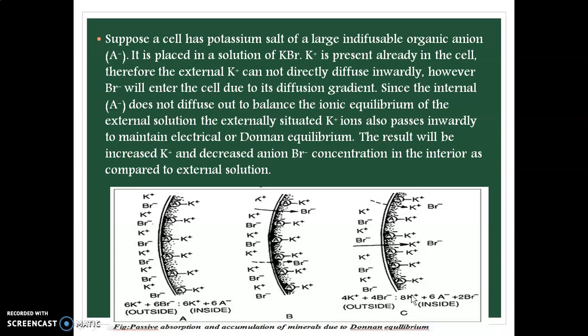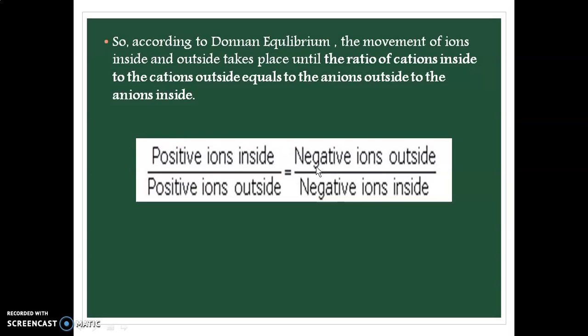This accumulation of a particular ion inside the cell occurs without the expenditure of energy. This is called Donnan equilibrium. The equation of Donnan equilibrium is: positive ions inside divided by positive ions outside equals negative ions outside divided by negative ions inside — the ratio is equal.